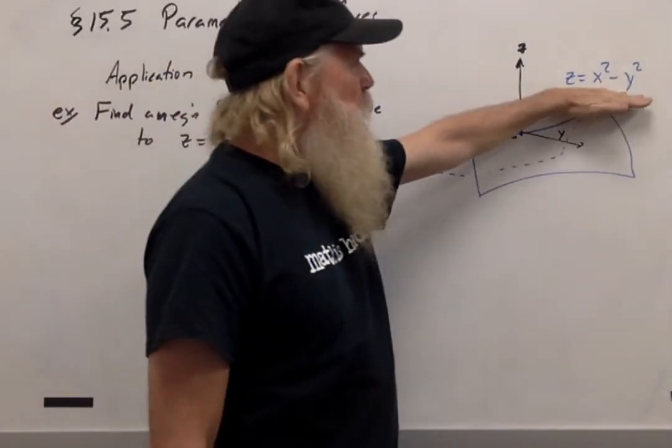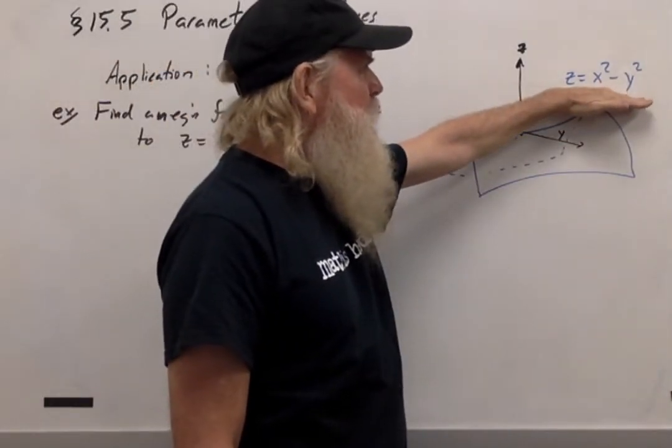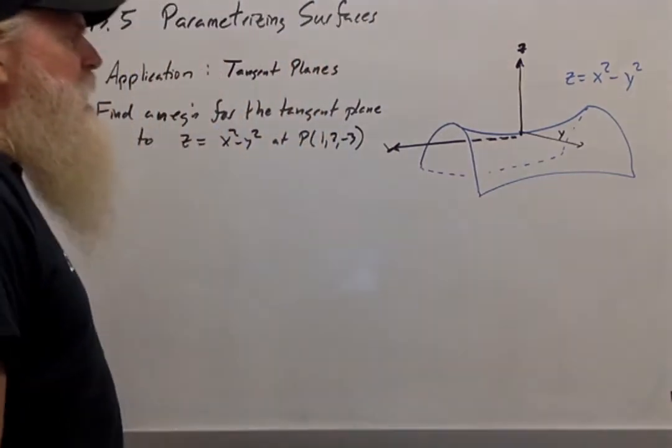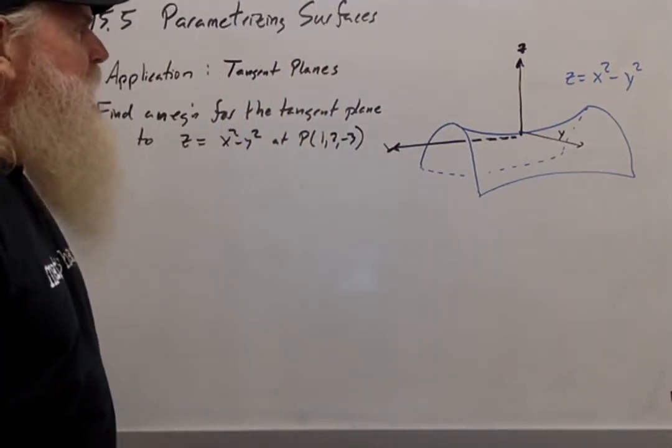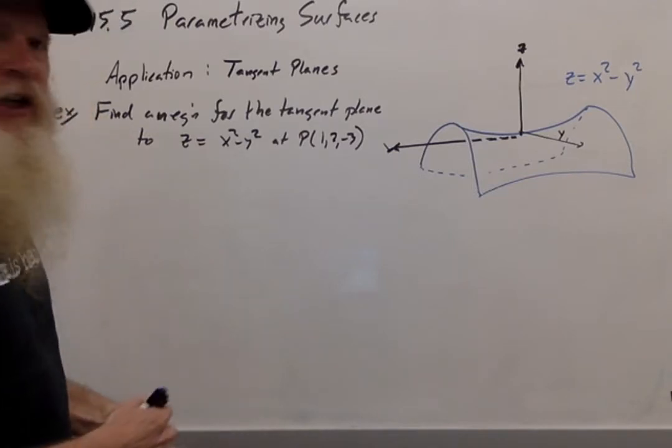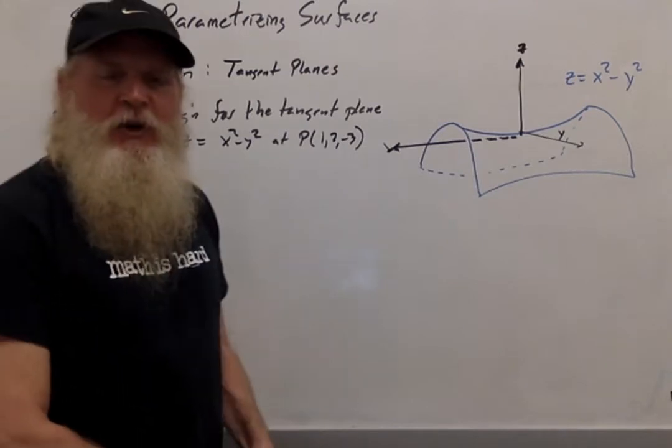Now you might remember that the graph of z equals x squared minus y squared is a hyperbolic paraboloid. Not really important to know the picture, but I'd like us to use some kind of geometric imagination as we work on this. So first of all, before I go through this process,